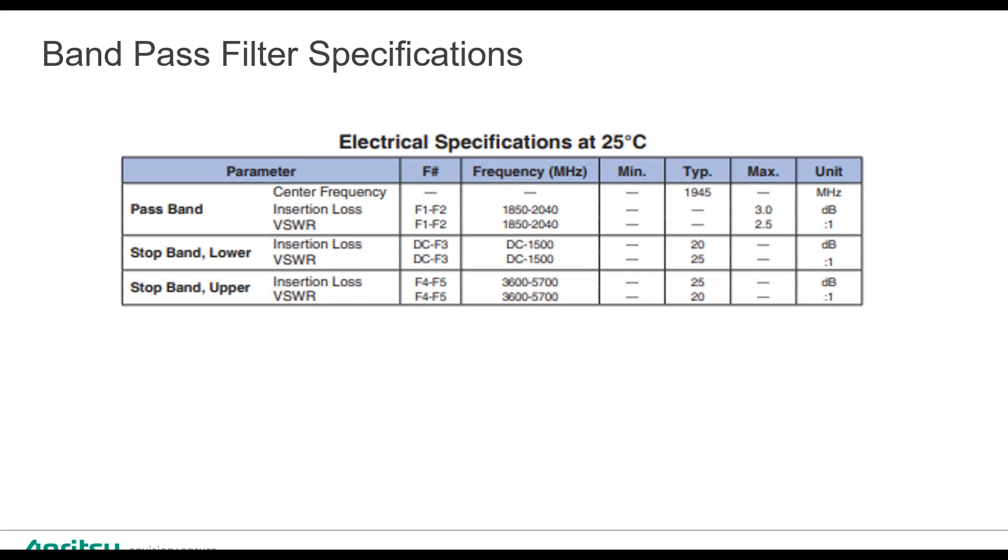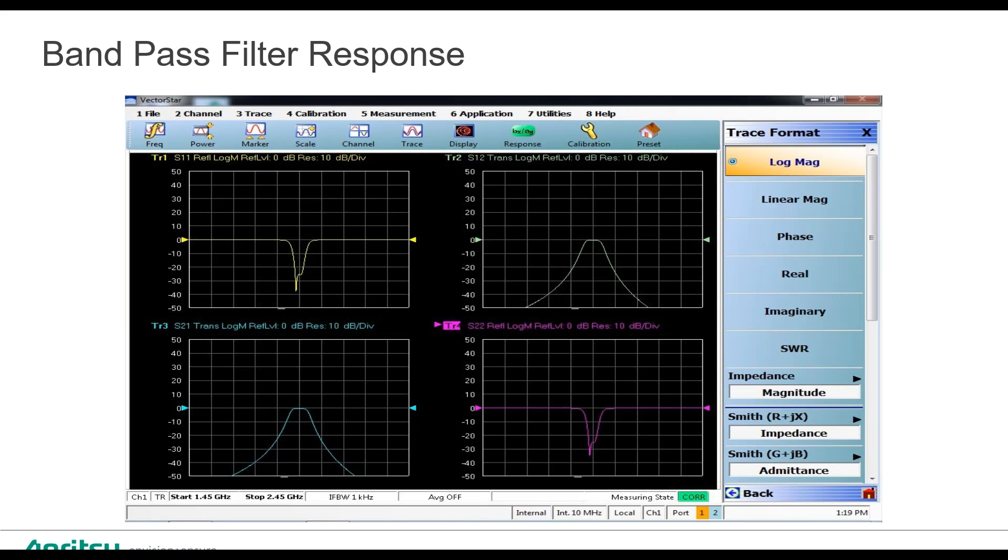Band pass filter. Obviously, we're going to have a stop band on the lower and a stop band on the upper. Of course, we have our pass band. If we look at this, the default specification for the traces that you'll see for S11, S12, S21, and S22, we can see that our filter shape is very good.